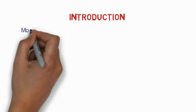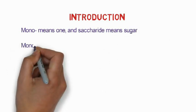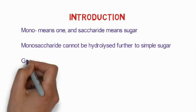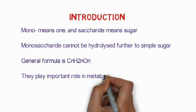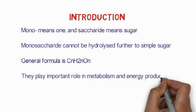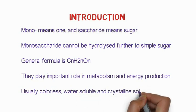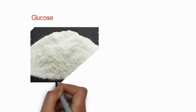Monosaccharides are the first class of carbohydrates — 'mono' means one and 'saccharide' means sugar. Monosaccharides cannot be hydrolyzed further into simple sugars. Their general formula is (CH₂O)n. They play an important role in metabolism and energy production. Usually they are colorless, water-soluble crystalline solids.